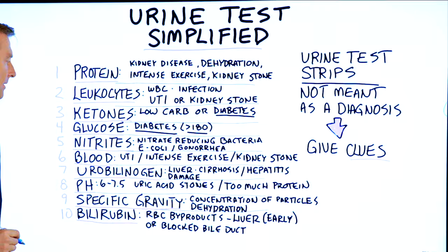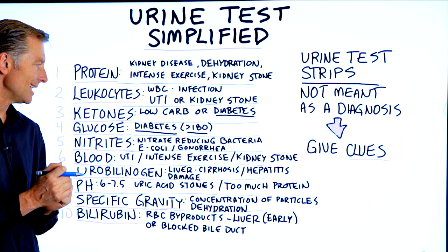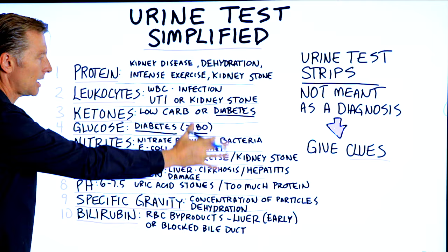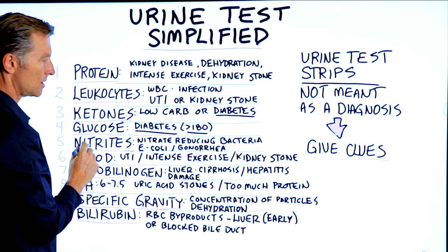Number five is nitrites. There are certain bacteria that are involved with nitrites. If there are nitrites present, that means there could potentially be E. coli, gonorrhea, or some other bacteria that is breaking down nitrates. Certain bacteria, if they're thriving, will increase this. So if you have both nitrites and leukocytes, that could indicate an infection.